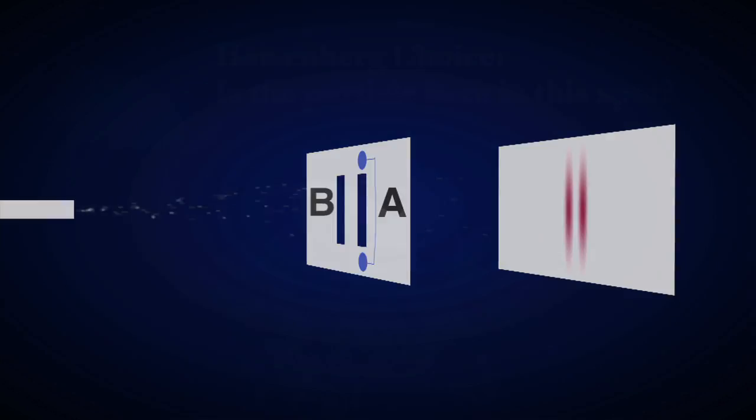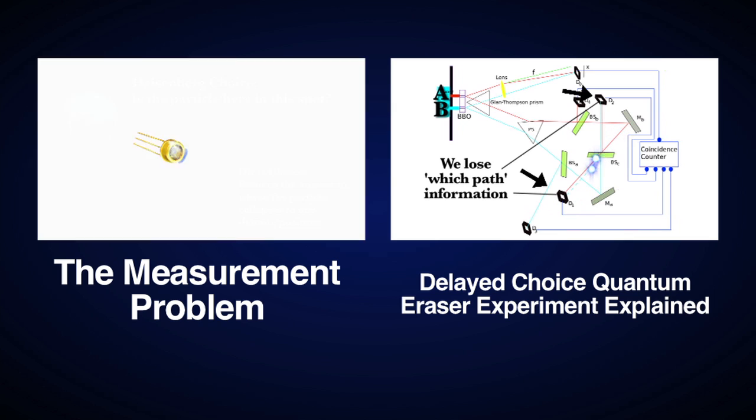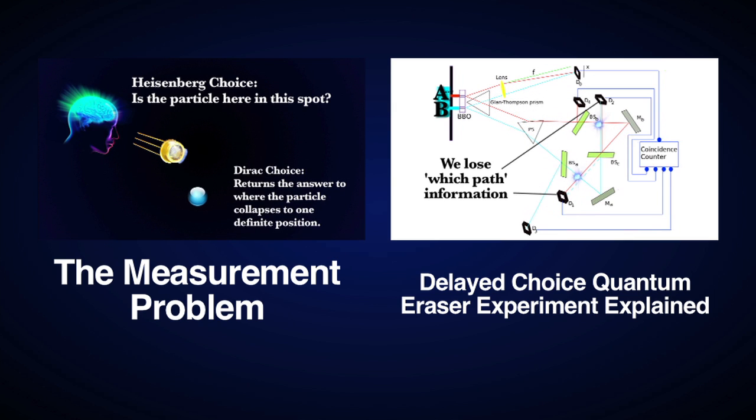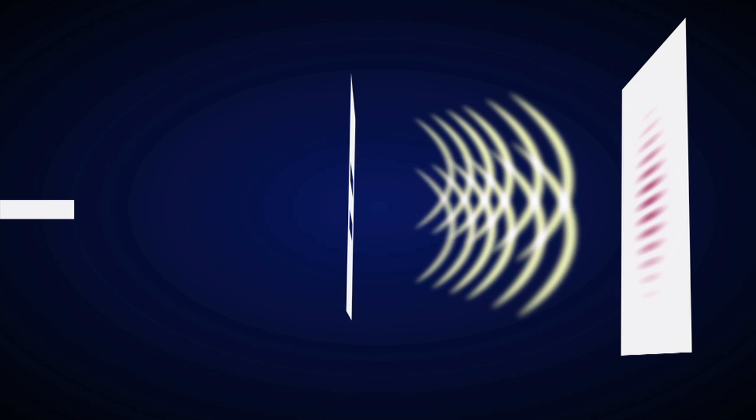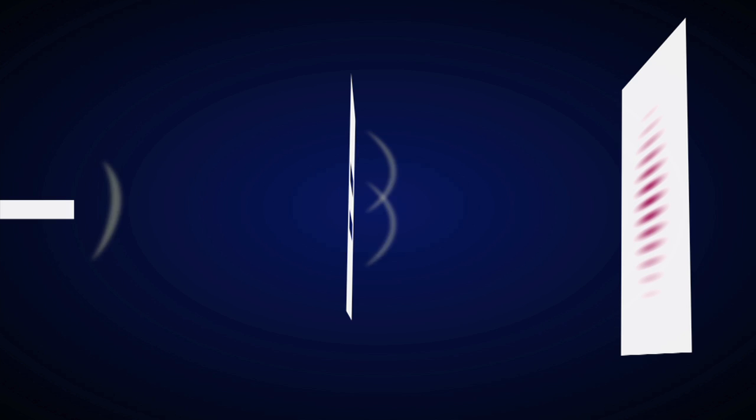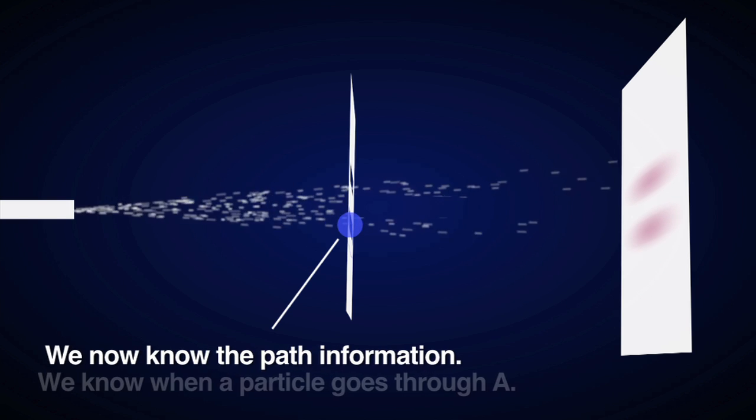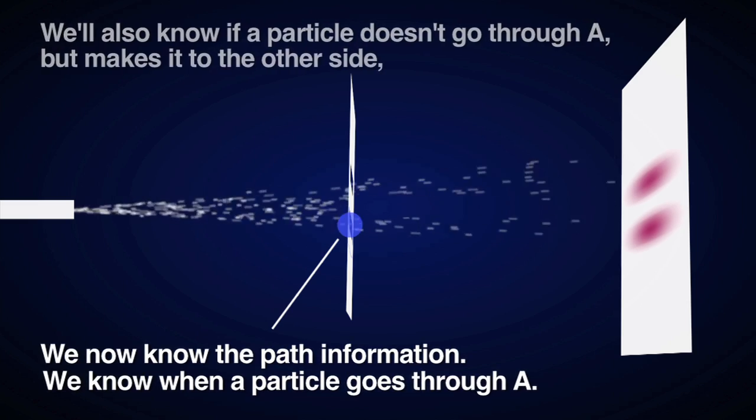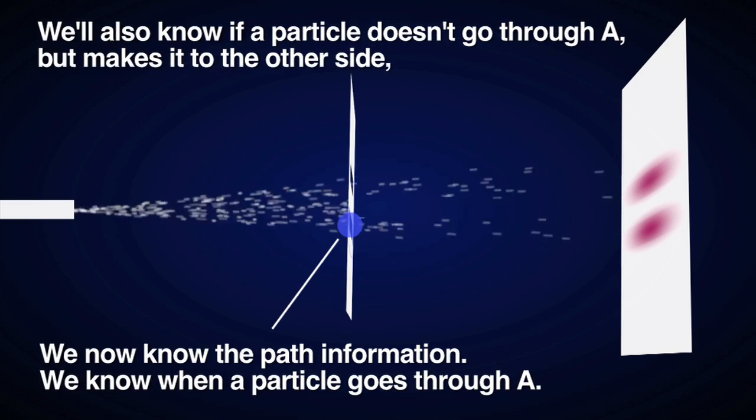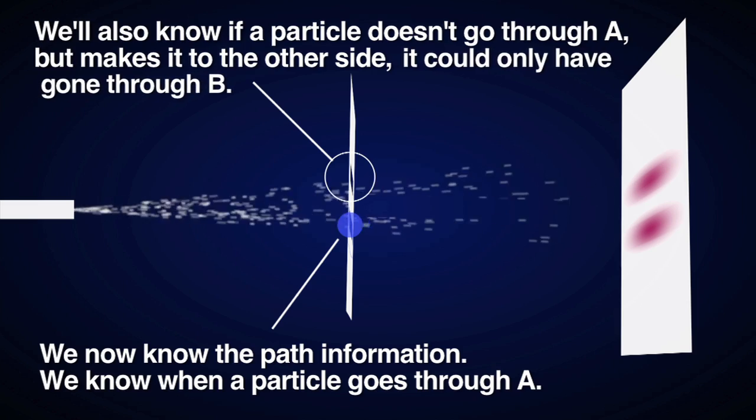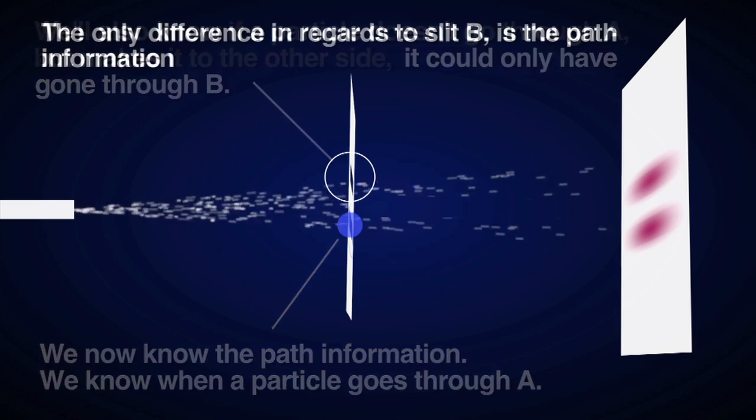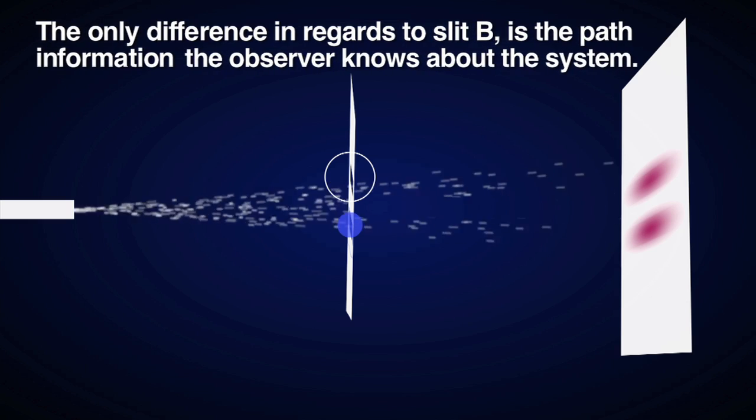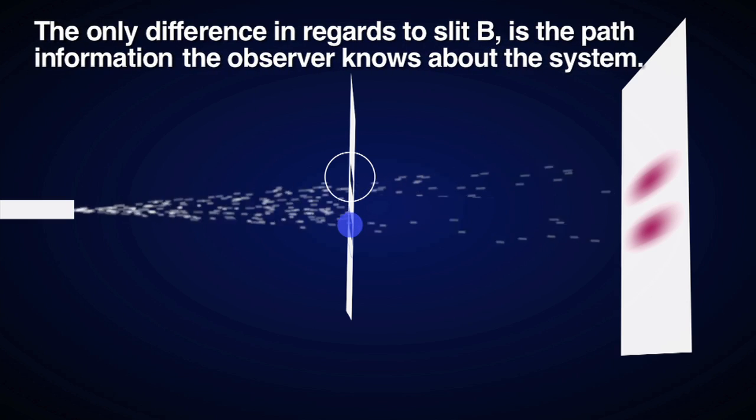The only logical conclusion is what we have been arguing for in previous videos. The only difference that happens when there is no measuring device and when there is one placed is our knowledge of the system. When there is no measuring device and the particles are randomly shot at the double slit, we have no clue which path they take. So the probability distribution of where the particle could be spreads out. However, if we measure at one slit, we know the path information, and we know when a particle goes through slit A. And we will also know if a particle doesn't go through slit A but makes it to the other side, it could only have gone through slit B. Therefore, the only difference in regards to slit B is the path information the observer, we, know about the system. It collapses about what the observer knows, not about interaction.